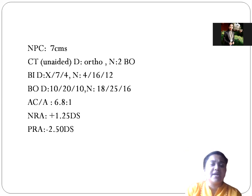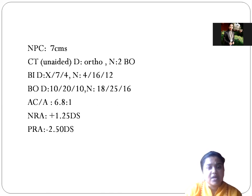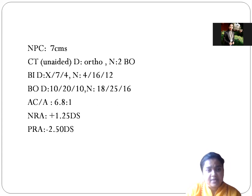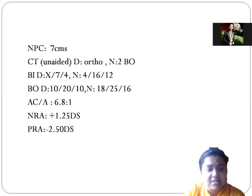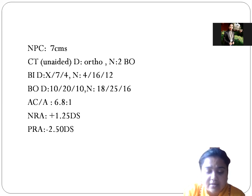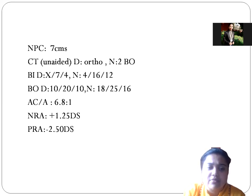When we checked the NPC, it was 7 cm. Cover test was orthophoria for distance; for near it was 2 prism esophoria. The base-in value for distance is X7/4, which is quite normal for adults. Base-in for near is X13/10, which is also quite okay.